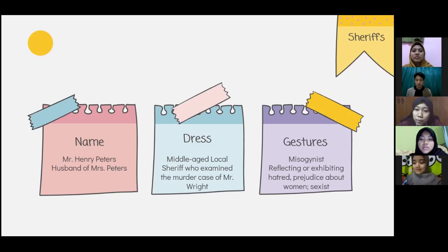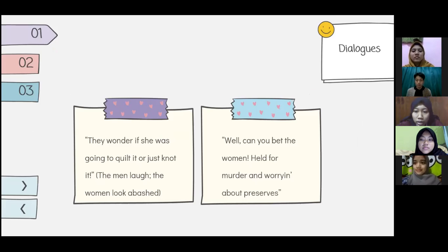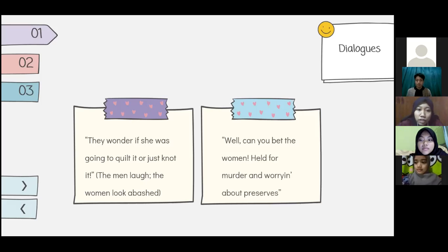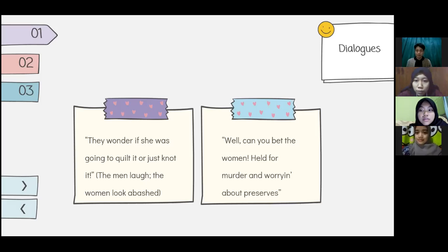The Sheriff speaks very little himself and is not paying attention to little things. It is shown from the dialogue: 'Nothing here but kitchen.' Everything about women is not seen as helping to solve the murder case. He also teases the women about their interest in Mrs. Wright's quilt, showing his insensitivity towards women. From the dialogue: 'They wondered if she was going to quilt it or just knot it.' The men laugh, the women look abashed. Another dialogue: 'Well, can you beat the women? Worried about murder and worrying about preserves.'